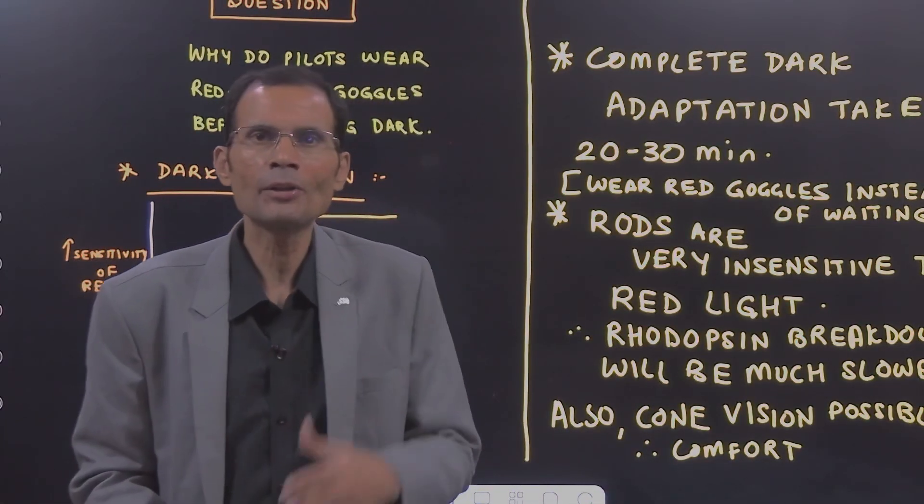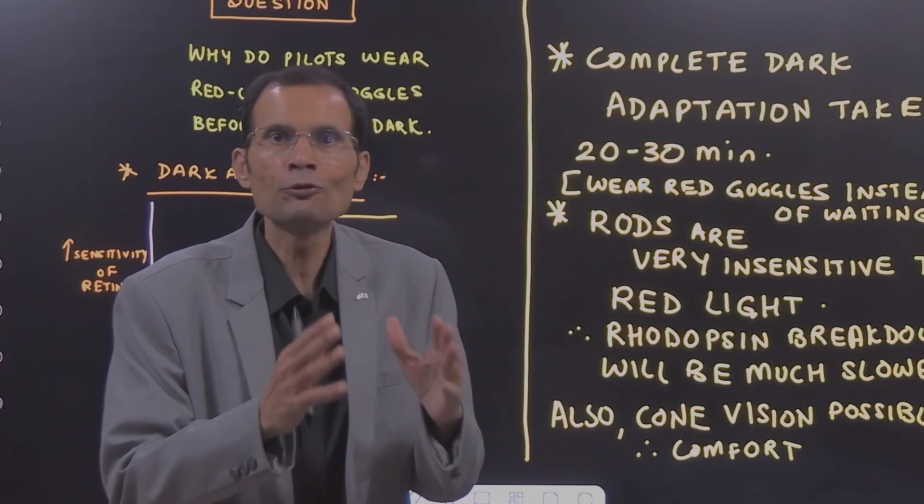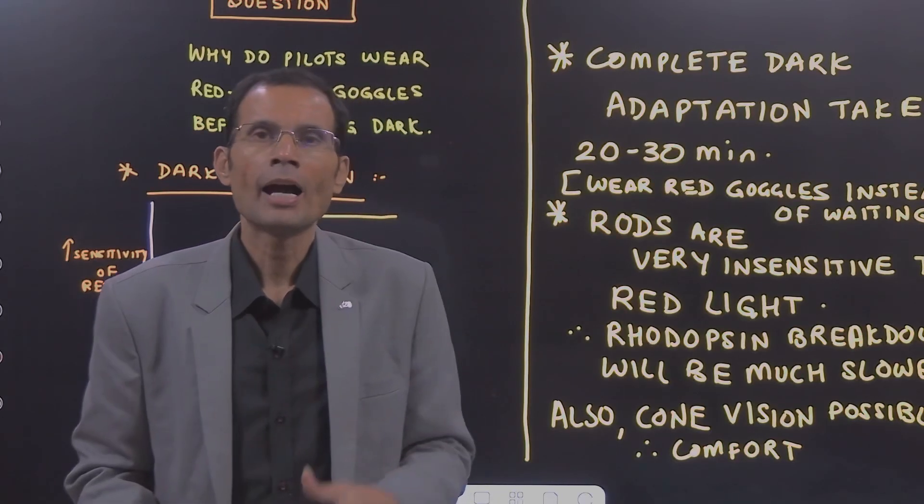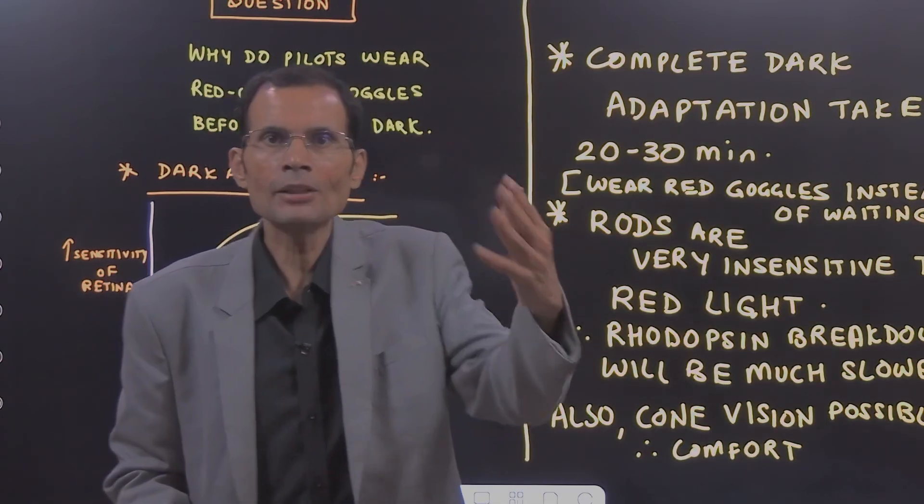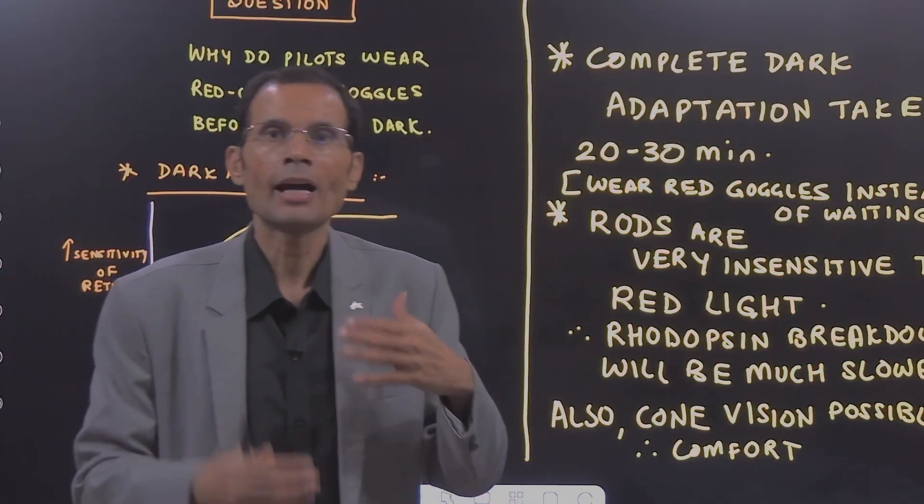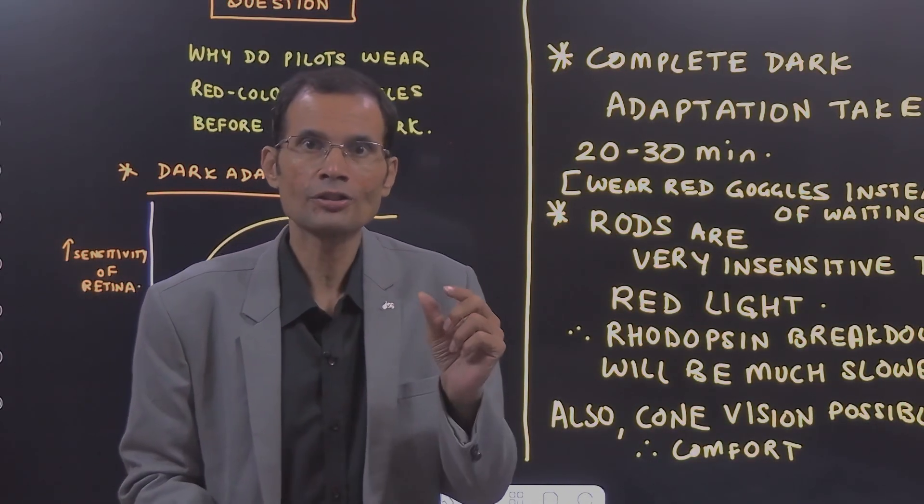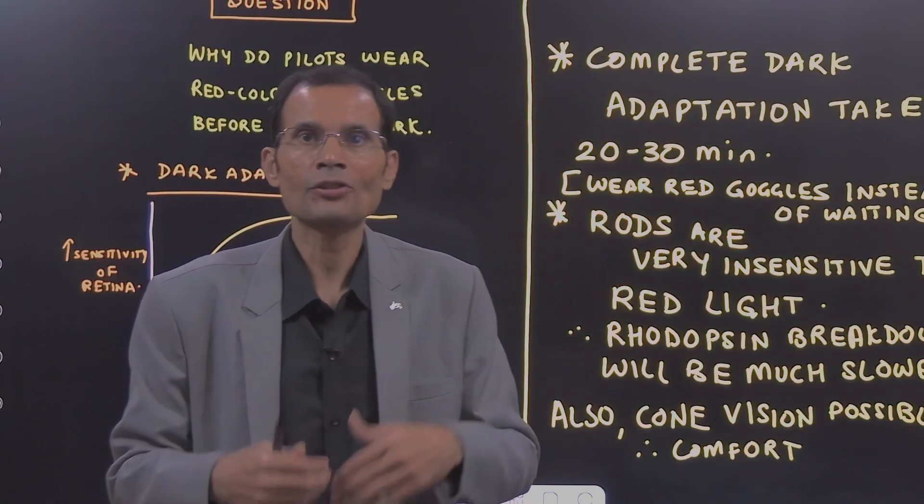Why do we need this increased sensitivity? Because in the dark, there are very few photons of light, very very less light and that means as much light can be sensed as possible will be required and that means rods will have to be extra sensitive.